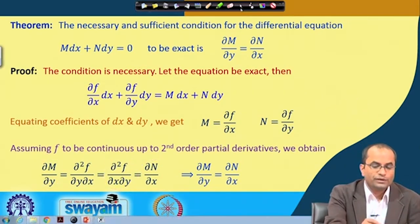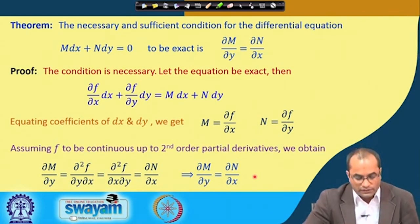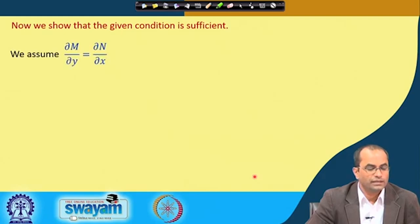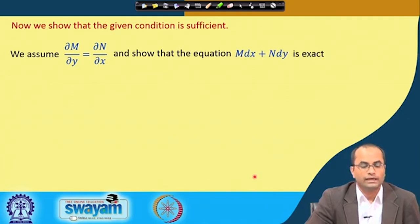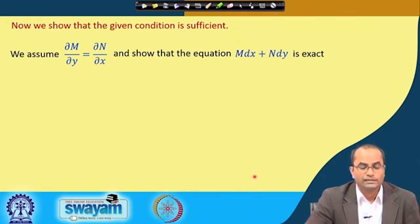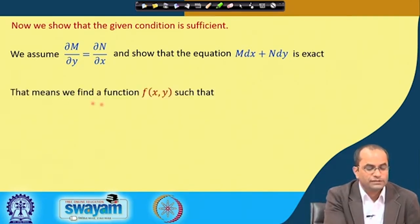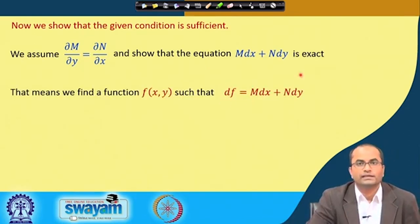Now we look the other way: if this condition holds, we show the equation is exact, completing the proof of necessary and sufficient condition. We assume the condition ∂M/∂y = ∂N/∂x holds and show that M dx + N dy is exact. To show exactness we must construct a function f whose differential is exactly M dx + N dy.